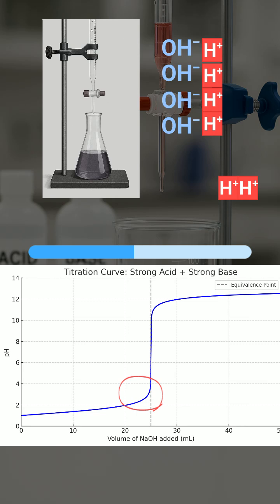The pH rises gradually at first because H+ ions are still in large excess. But here's what's important: as we approach the equivalence point, we're nearly finished neutralizing all the H+ ions.